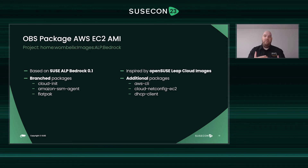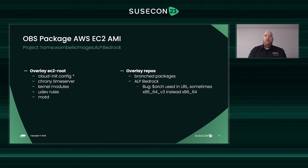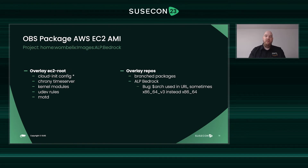Now that I had an idea about the ALP part, I wanted to learn more about how other EC2 images are built, and I used the openSUSE Leap cloud image as my starting point. It became clear that I would also need the AWS CLI, cloud-net config for EC2, and a DHCP client in my own image. Then the last step were overlays — basically archives with a folder structure similar to the actual operating system — which are extracted during the build and become part of the final image. For example, I have an EC2 root overlay which includes the basic cloud-init configs, EC2 user setup, settings for time server, kernel modules, udev rules, and a customized message of the day.